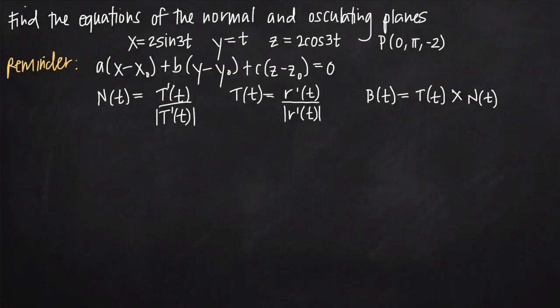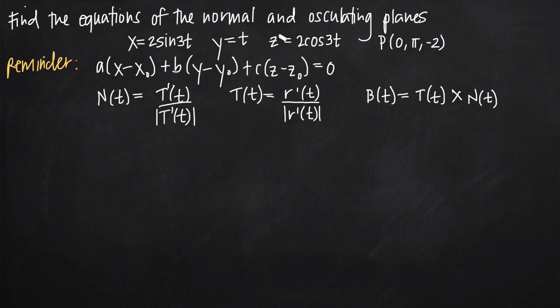Today we're going to be talking about how to find the equations of the normal and osculating planes. In this particular problem we've been given these parametric equations: x equals 2 sine of 3t, y equals t, and z equals 2 cosine of 3t. We've been asked to find the normal and osculating planes of the curve defined by these parametric equations at the point (0, π, −2).